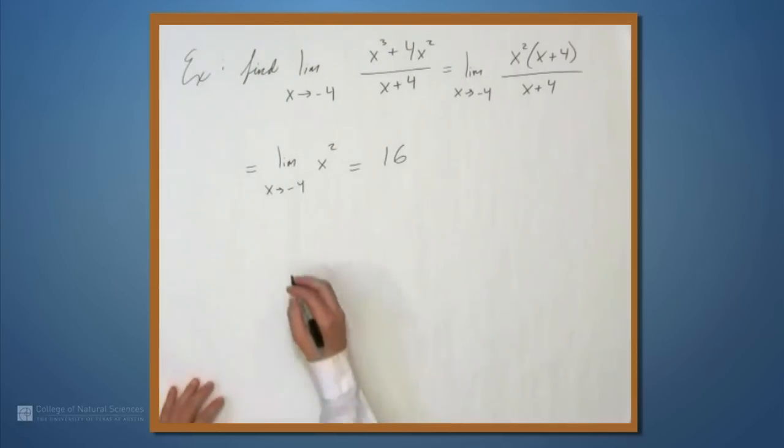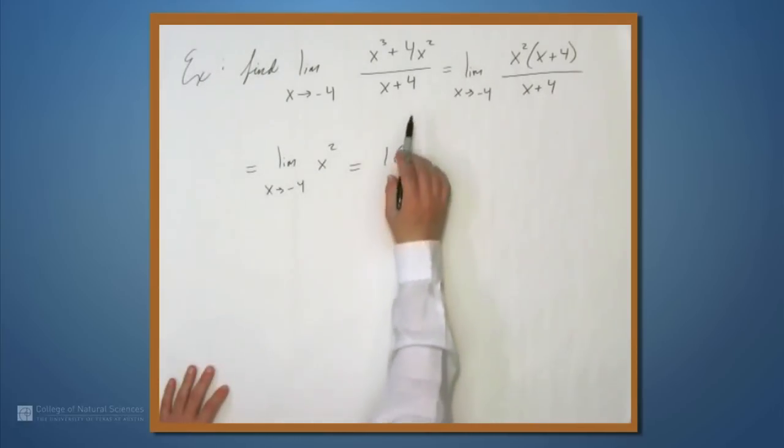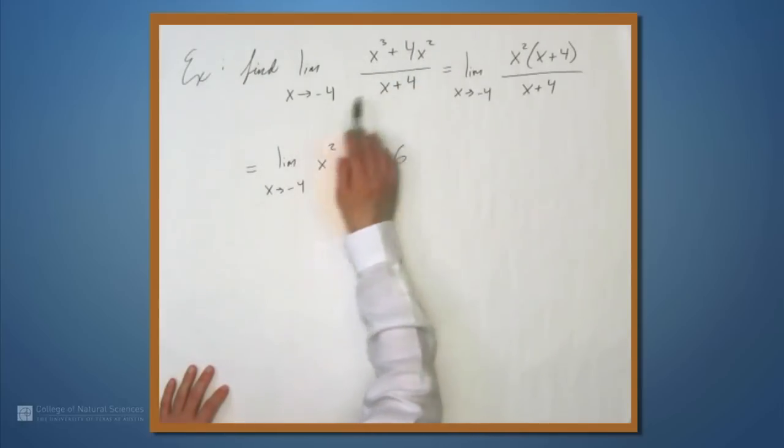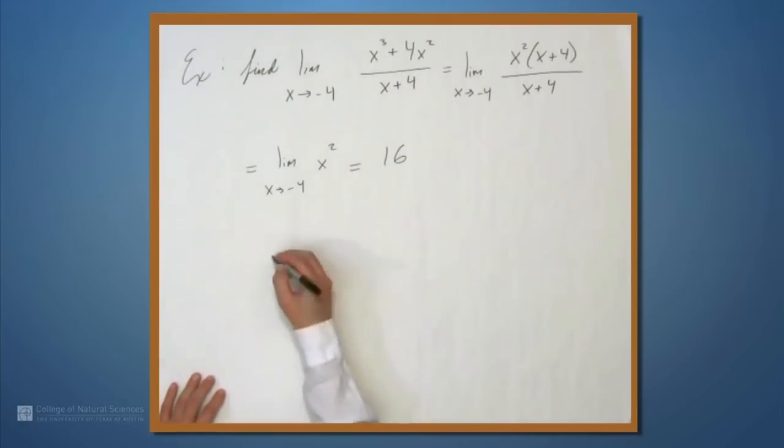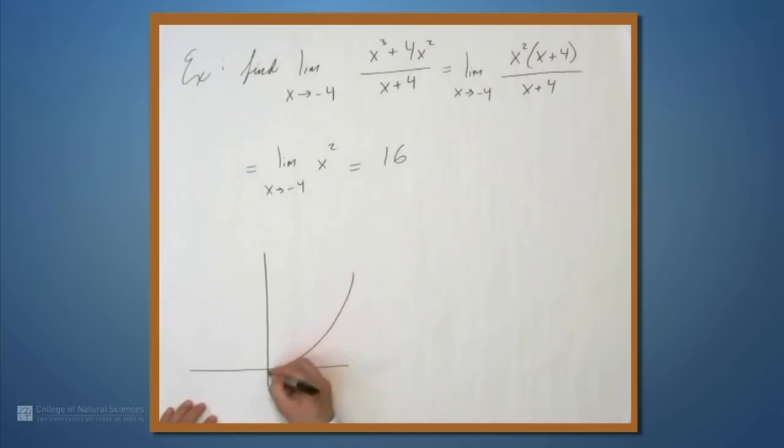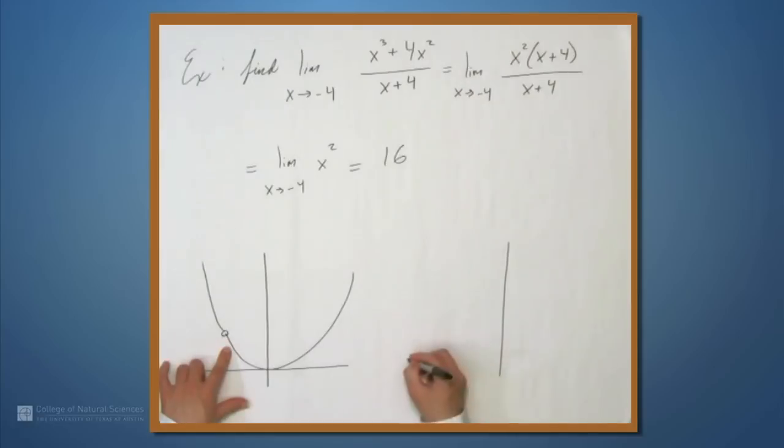So let's look at the graph of this just like we did before. What we just showed is that this expression for every value other than negative 4, this expression is the same as x². So the graph of the original function is just a parabola with a hole at negative 4. So we replaced this thing with what seems a little bit more natural, namely this hole filled in. And we get this parabola. Well, that's not a very good parabola, but you get this picture. And now we have the natural value filled in at negative 4, we have 16. And those are two examples of how you find limits algebraically.